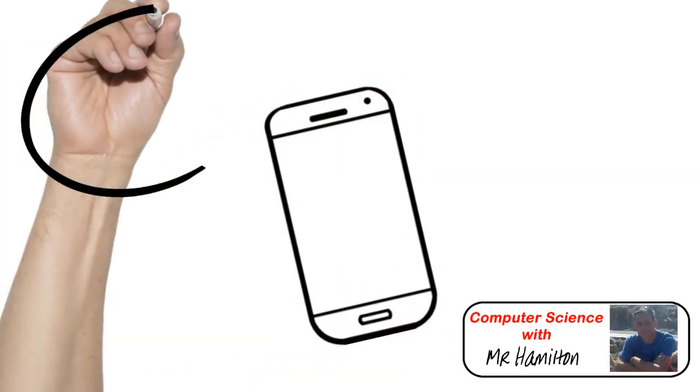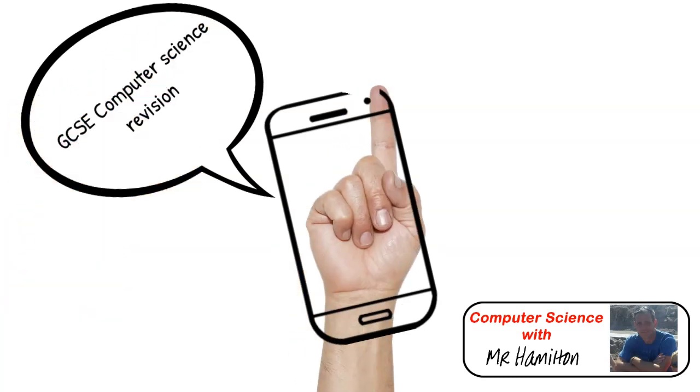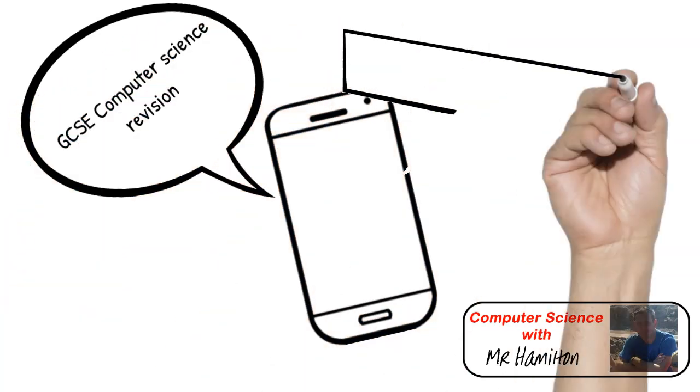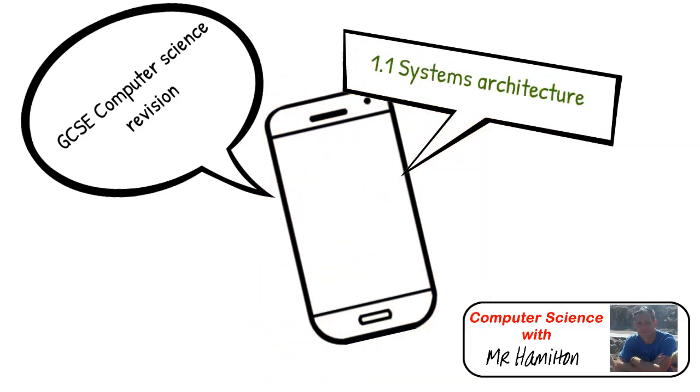Hello, welcome to Computer Science with Mr. Hamilton. This is a GCSE Computer Science revision video covering section 1.1 of the system architecture for the OCR specification.